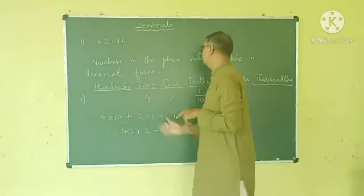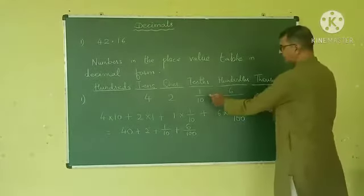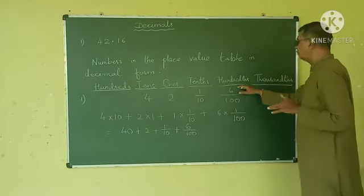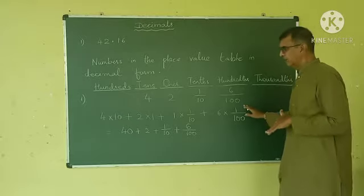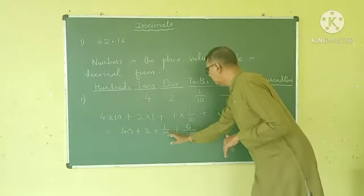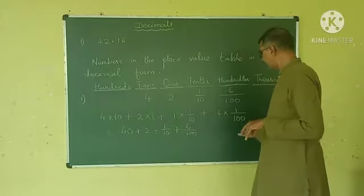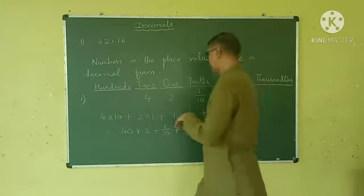And then, as you go on to the right hand side, there are 2 places away from the decimal, so you divide 6 by 100. And so finally, you get 1 tenth and 6 upon 100, isn't it?